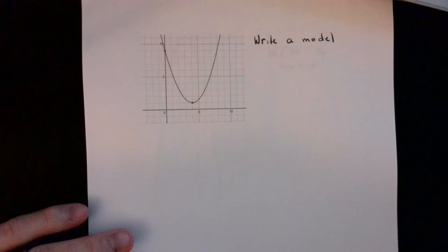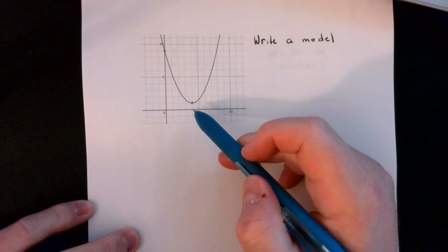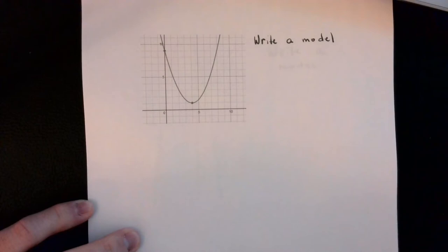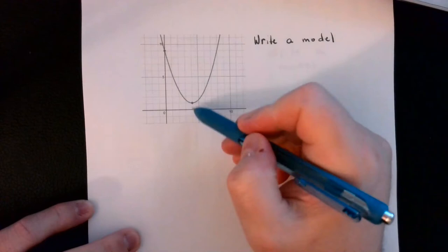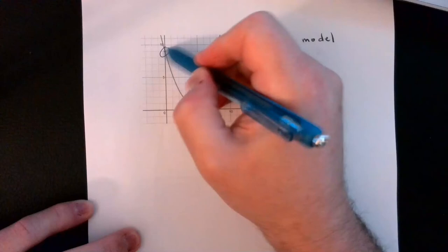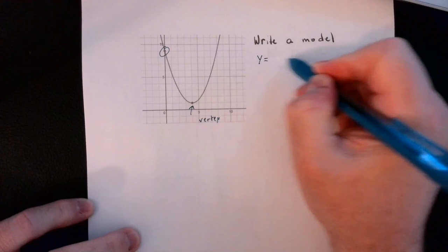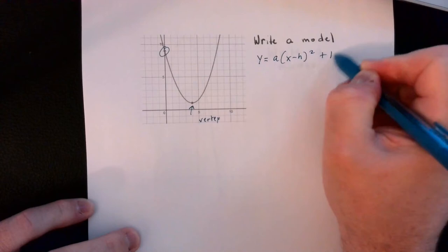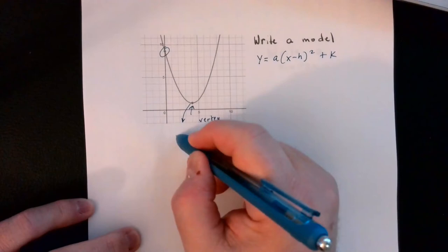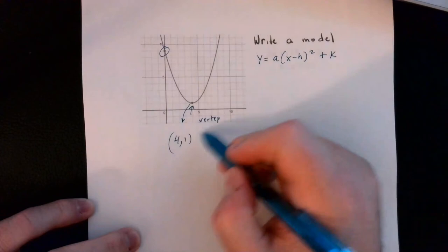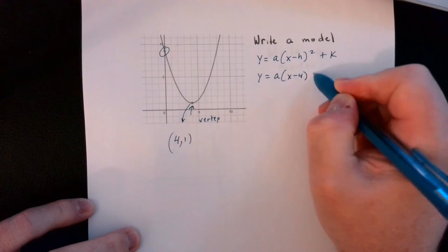The next type is writing a model from a graph. You either need the vertex and another point, or the zeros and an additional point. Here we're given the vertex and an intercept, so we'll use vertex form: y equals a times (x minus h) squared plus k. The vertex is (4, 1), so substituting: y equals a times (x minus 4) squared plus 1.